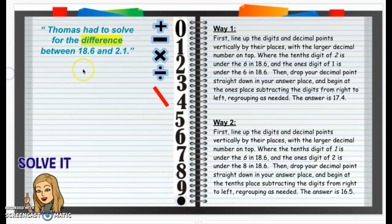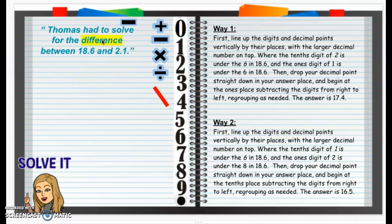Difference means subtract, because I know 'sum' means adding, but this is difference, so it's going to be subtracting. So Thomas had to solve for the difference between 18 and 6 tenths and 2 and 1 tenths. Now, how are we going to solve this subtraction problem when we have decimals?